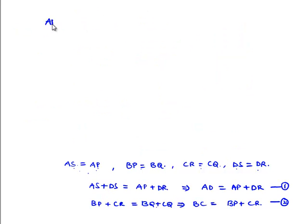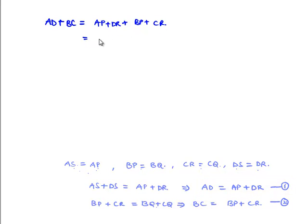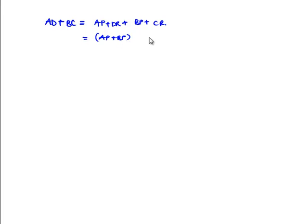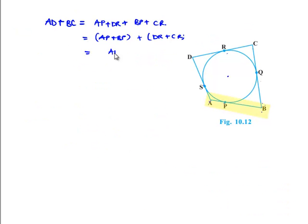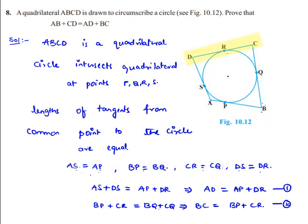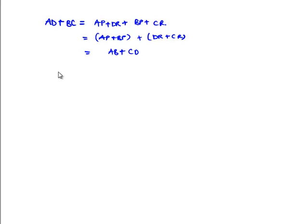Adding equation 1 and equation 2: AD plus BC equals AP plus DR plus BP plus CR. Writing AP plus BP together and DR plus CR together, AP plus BP equals AB and DR plus CR equals CD. Therefore, finally, we get AD plus BC equals AB plus CD.